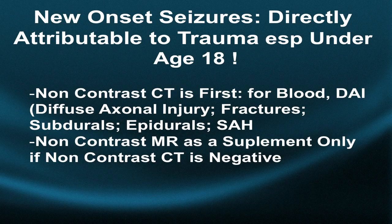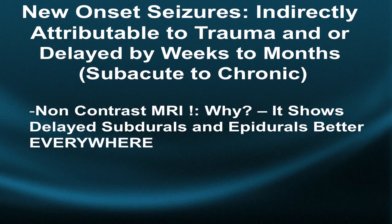For new onset seizures directly attributable to trauma, especially in people under age 18, non-contrast CT is first due to the acute nature of the setting. It detects blood, diffuse axonal injury or shear injury, fractures, subdurals, epidurals, and subarachnoid hemorrhage. Non-contrast MRI is used as a supplement only if non-contrast CT is negative and suspicion remains high for an underlying problem.